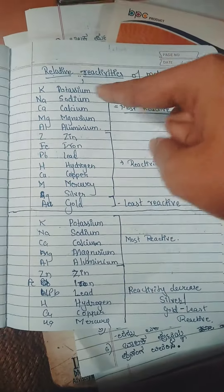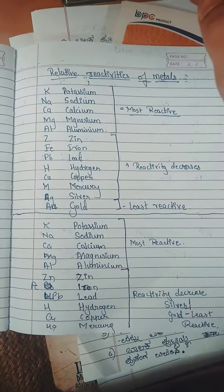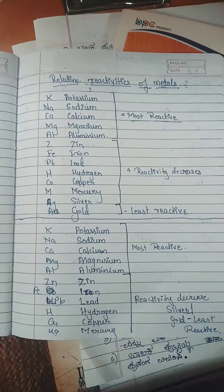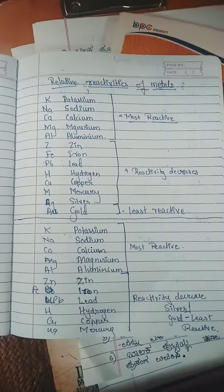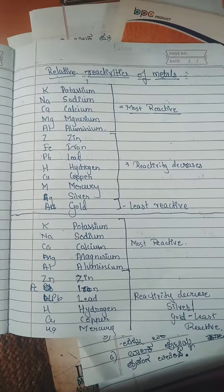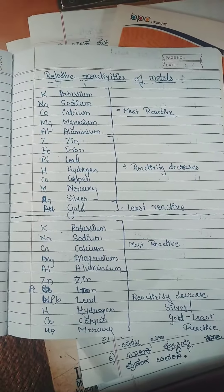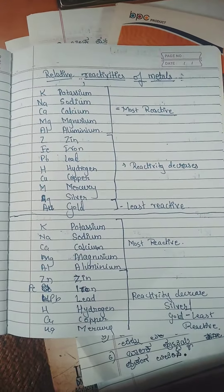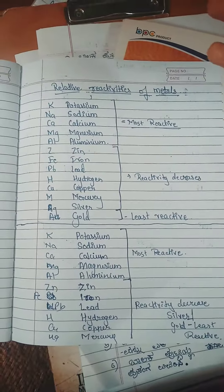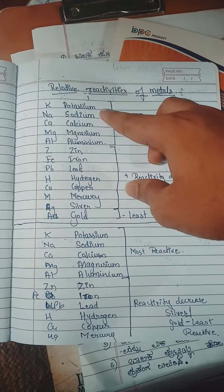In this topic, we will look at the use of metals and their reactivity. There are three types in the reactivity series: most reactive, least reactive, and those in between. The most active metals are potassium and sodium.